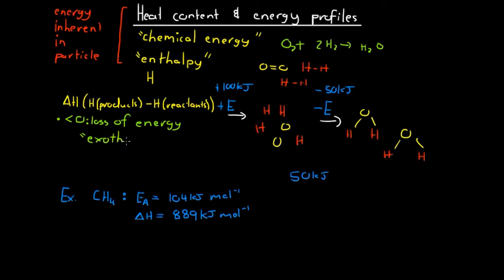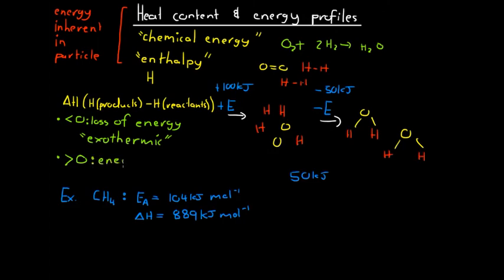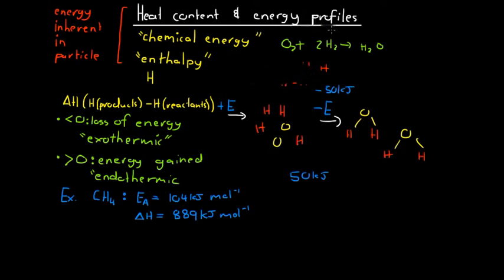Just like when we exhale we breathe air out, if a reaction is exothermic it is releasing energy — that's how we remember exothermic. If delta H is greater than zero — a positive number — then our products have more energy than our reactants, meaning energy has been gained. We refer to this type of reaction as endothermic. We can show these changes of energy on a special type of diagram called an energy profile diagram.